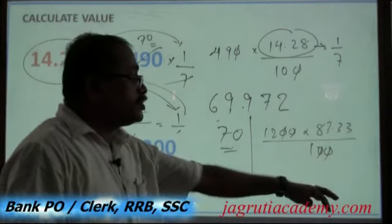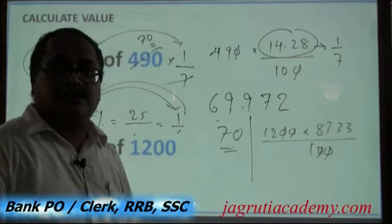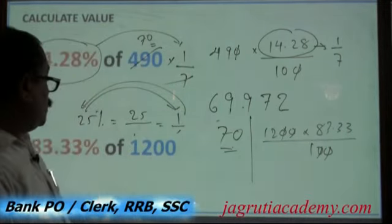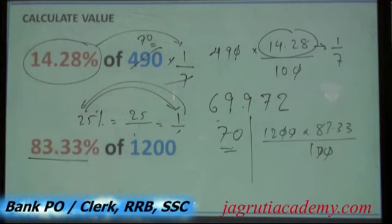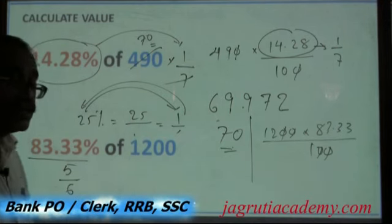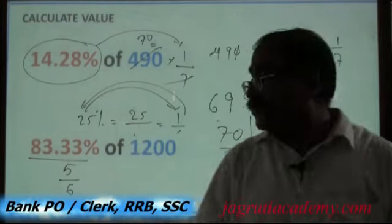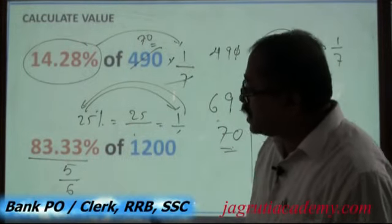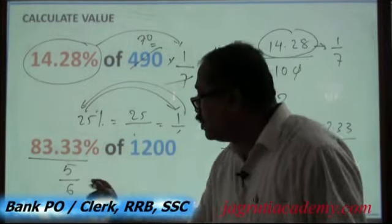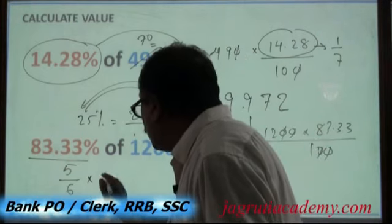Now anyhow if there is no alternative we will do the calculation. But if you are familiar with that 83.33 percent is nothing but 5 by 6 in terms of fraction, if you are aware of that part, then how much time it takes for you to find out 5 sixth of 1200.